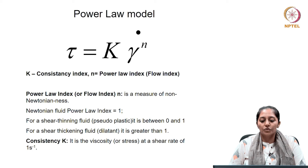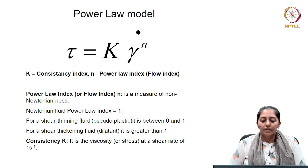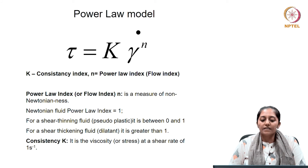The power law model is used to define non-Newtonian fluids. The power law index n is a measure of the non-Newtonianness of a fluid; if n equals 1 then it is a Newtonian fluid. For shear thinning pseudo plastic fluids, n is between 0 and 1, and for shear thickening dilatant fluids the n value is greater than 1. The constant k is called the consistency index — it is the viscosity at a shear rate of 1 second inverse.